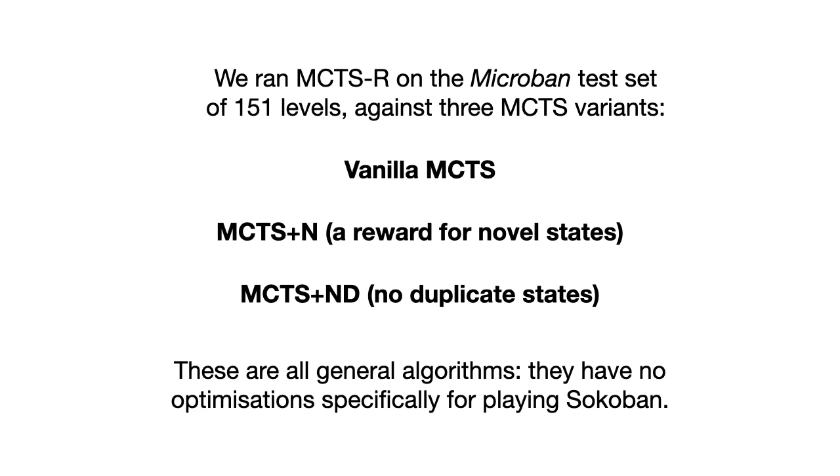So before I close out this talk, I wanted to discuss just one or two results. I ran MCTS-R, which is what I've called this algorithm, on the microban test set. So this is 151 levels of Sokoban. And I did it against three variants of MCTS. So vanilla MCTS, no adjustments whatsoever. MCTS plus N. In this case, the MCTS received a small reward every time it encountered a state that it had not seen before. So this is a very common optimization for MCTS and tries to avoid some of those problems I mentioned earlier. And finally, I added a variant of MCTS that never generated a state it had seen before. So this is sort of like a naive version of reversibility. It doesn't compress or reorder the tree, and it's strictly worse than MCTS-R. And I knew that when I made it, but I made it because a lot of people sort of think that's what MCTS-R is, and I just wanted to sort of compare the two so that readers could see the difference, see that they are different. And the other key thing to point out here is that all of these are completely general algorithms. So none of them know what Sokoban is, they don't know how to play Sokoban, they are completely general.